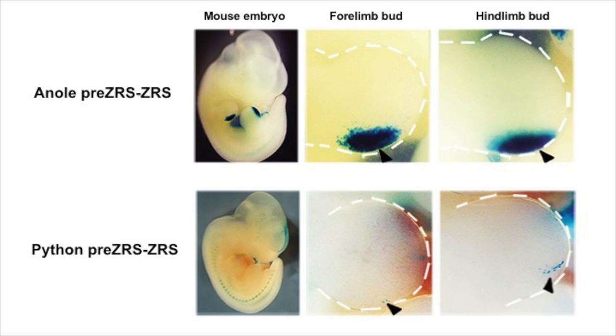But when we took the python enhancer and put it into mice, we saw a very different result. A very weak activity is seen in both the forelimb and the hindlimb. Just a few blue cells are seen in both of the limbs. So this enhancer is a very weak driver of transcription in the limbs.